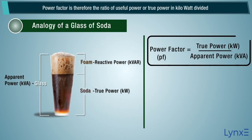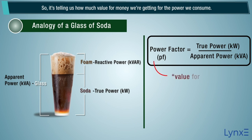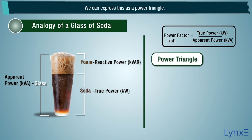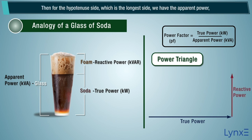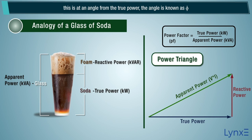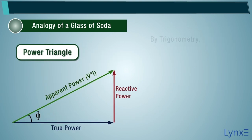Power Factor is therefore the ratio of true power in kilowatts, divided by what we are charged for, that is, apparent power in kilovolt ampere. So it's telling us how much value for money we are getting for the power we consume. We can express this as a power triangle, where the soda — that is the true power — is the adjacent line, and we have the foam, which is the reactive power, at right angle. Then for the hypotenuse side, which is the longest side, we have the apparent power. This is at an angle from the true power; the angle is known as phi. So, by trigonometry.